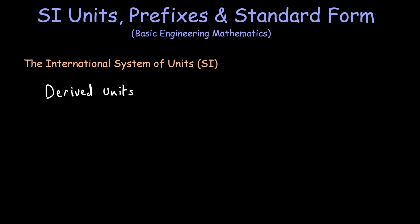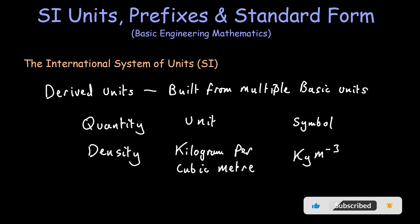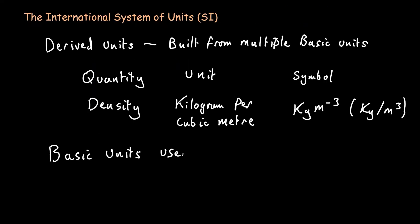But there are many other units called derived units, and these derived units are built from combining certain basic units together. So if we take density for example, density has SI units of kilogram per cubic meter and density is the measure of the amount of mass that occupies a specific volume. So the basic units that we use for density are mass in kilograms and length in meters.